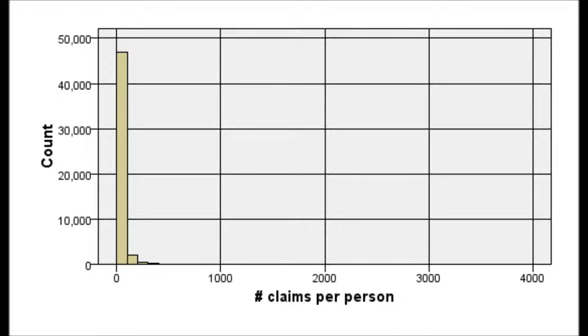The first histogram shows, just like before, that the vast majority of members have almost no claims at all. There are very few members with large numbers of claims, and we can't even see them until we take the logarithm of the number of claims.